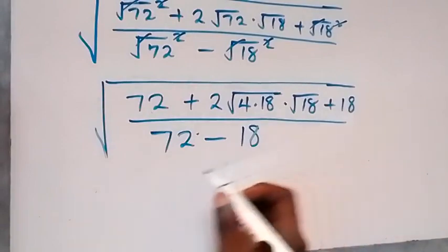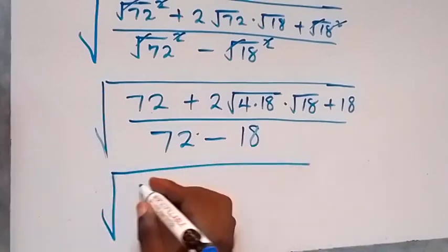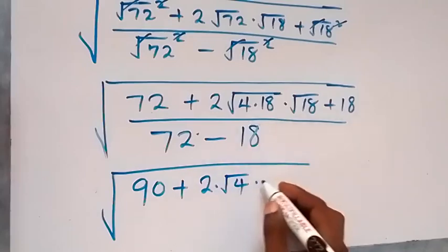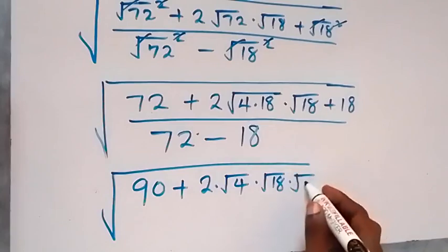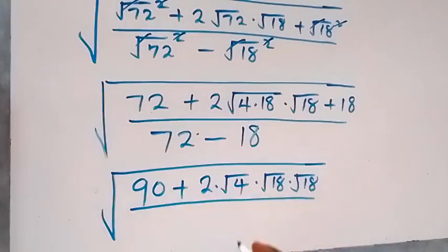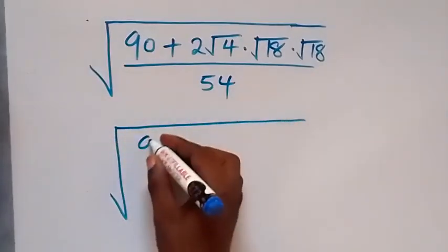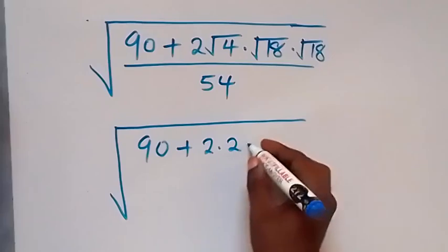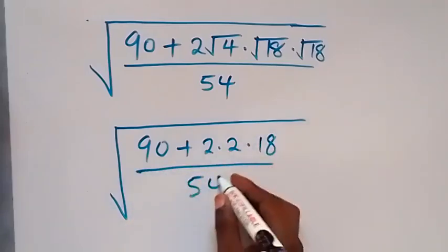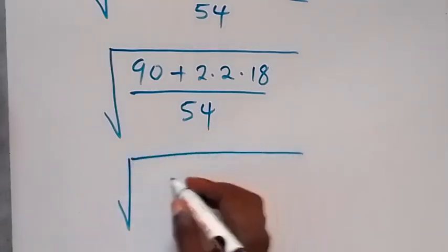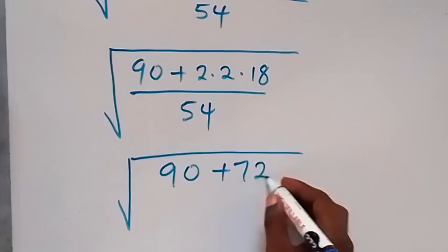We can combine 72 and 18 together to get 90. So we have root 90, plus 2 times root 4 times root 18. We separate root 4 as 2, and root 72 times root 18 gives root 90. So the middle term becomes 2 times 2 times 18, which gives 72. The denominator is 72 minus 18, which gives us 54. So we have square root of 90 plus 72, divided by 54.